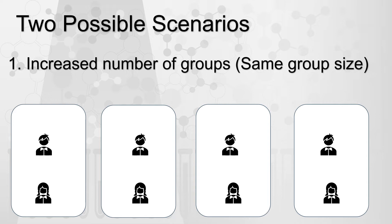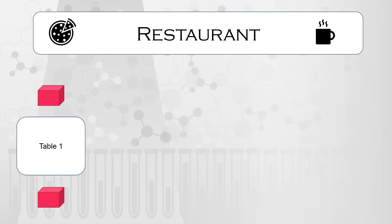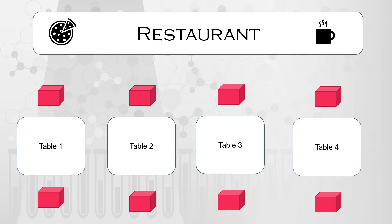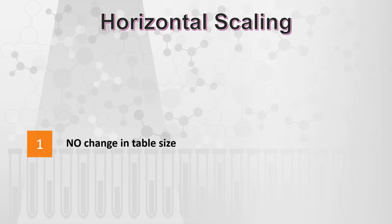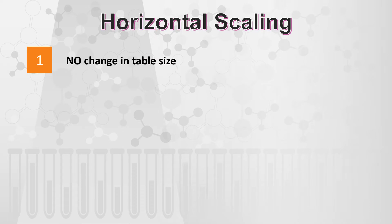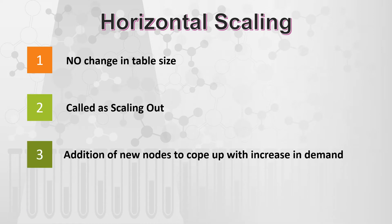Previously you had a maximum of two groups coming; now it has increased to four. In this scenario you can add two more tables. Note that each table is still serving two customers only — instead of two tables you now have four. This is exactly called horizontal scaling. The key characteristic is there is no change in the table size; previously it served two customers and now it still serves two customers. This is called scaling out.